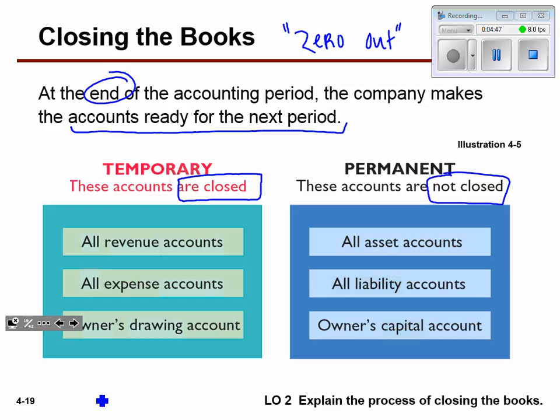What's temporary — or what's zeroed out? All revenue, all expenses, and the owner's drawing. To close them simply means if you have a thousand dollars sitting in revenue, we need to get that to be zero. Are we throwing that away? No, we're just moving it from bucket to bucket until it basically ends in the owner's capital account.